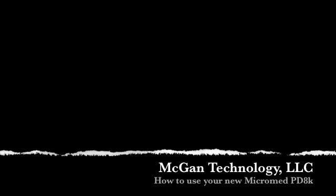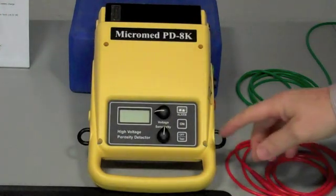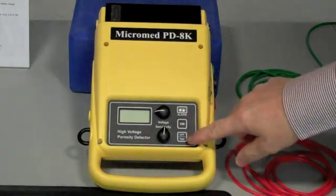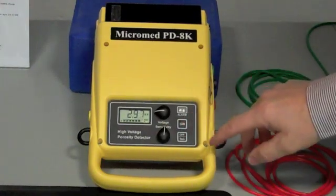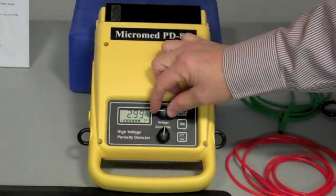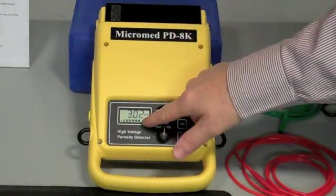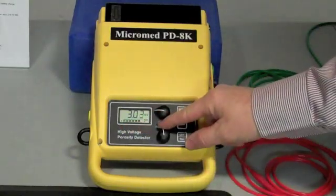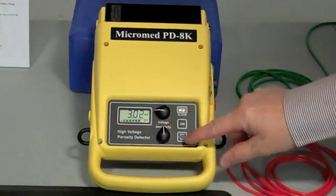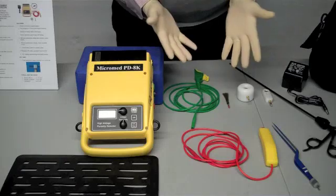Now let's go through the operation procedure of the PD-8K. First we have the base unit with an off button and an on button. Turn it on to bring your voltage setting here with this knob to approximately 3KB. There's also a battery indicator level underneath the voltage. Turn the unit off at this point.